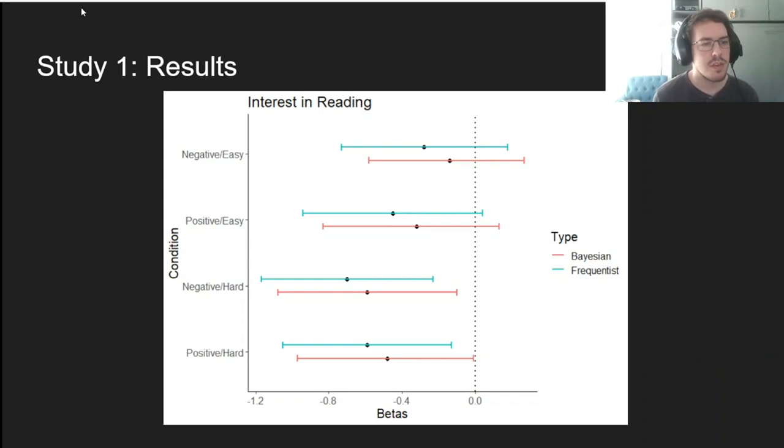In terms of results, this graph shows Bayesian and frequentist confidence intervals over the effect of each comment condition compared to the control. Overall, both difficult comments significantly reduced participants' interest in reading the article, while neither of the easy comments did. This supports our hypothesis that difficult comments reduce people's interest in reading scientific articles, while rejecting the alternative hypothesis of an easiness effect. And there are no main effects of valence in this case.